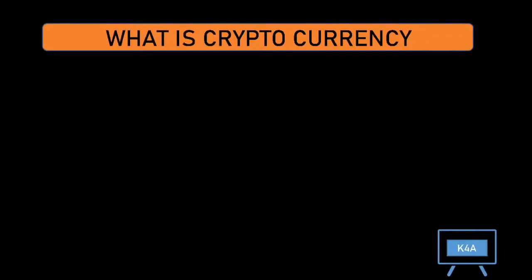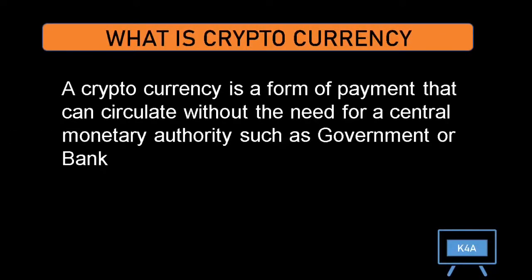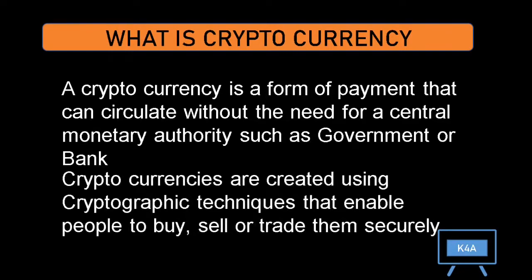What is cryptocurrency? A cryptocurrency is a form of payment that can circulate without the need for a central monetary authority such as a government or bank. Cryptocurrencies are created using cryptographic techniques that enable people to buy, sell or trade them securely.